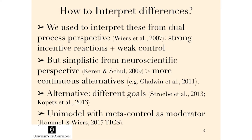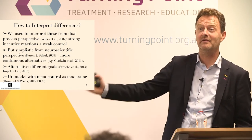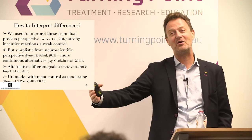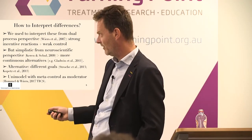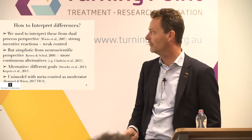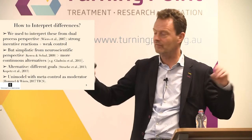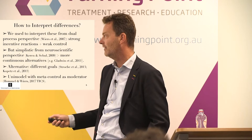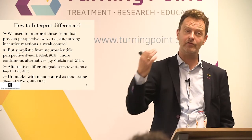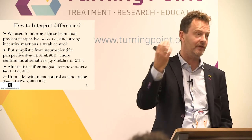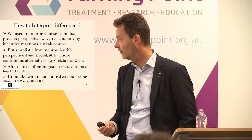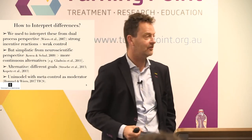We proposed a dual process model for addictions over ten years ago, which is still widely cited, but we've mostly stepped away from it ourselves. There are issues, especially from a neuroscience perspective, with simple dual process models because you can't really separate the so-called different systems. We've moved to more continuous alternatives. There's also an alternative psychological approach emphasizing that people have different goals, and cues basically activate different goals within the same overall system. Our latest model is a uni-model with meta-control as a moderator, which came out last December in Trends in Cognitive Sciences.